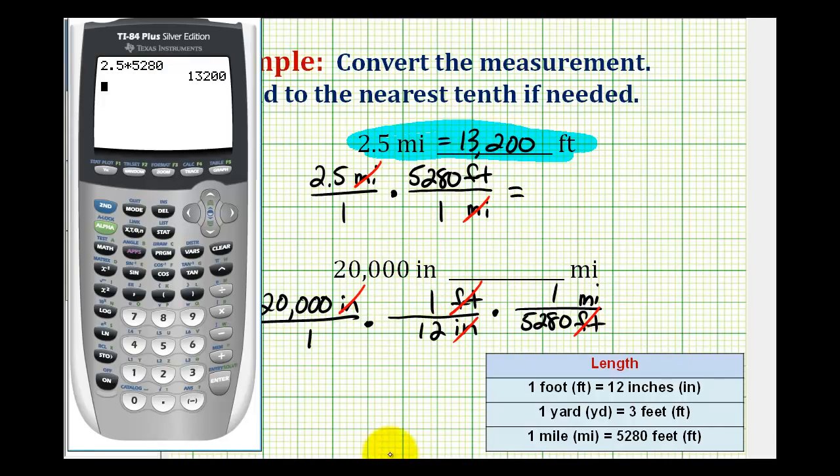Let's go back to the calculator. We're probably going to have to round for this value. Our numerator is 20,000 and our denominator is 12 times 5,280. So 20,000 inches is approximately 0.316 miles.